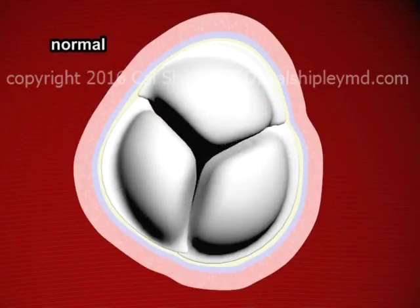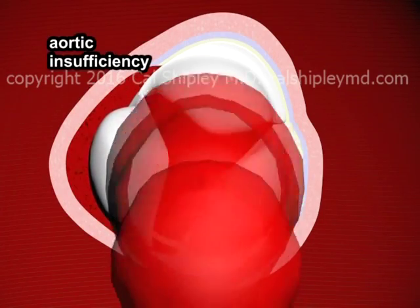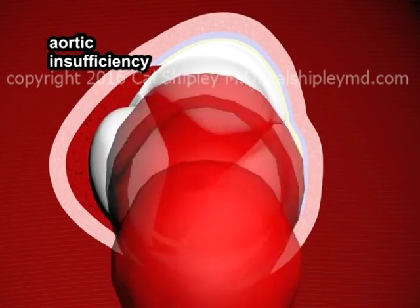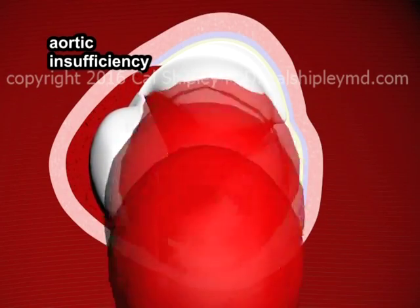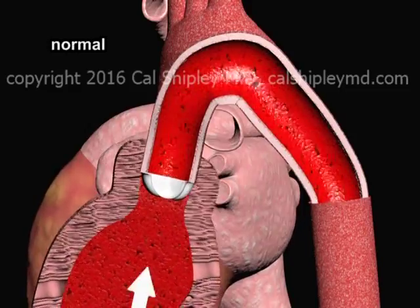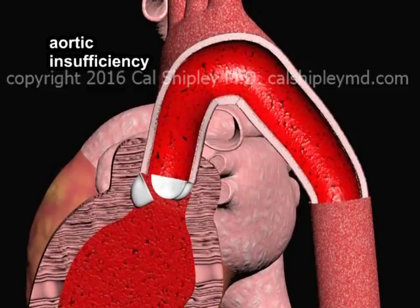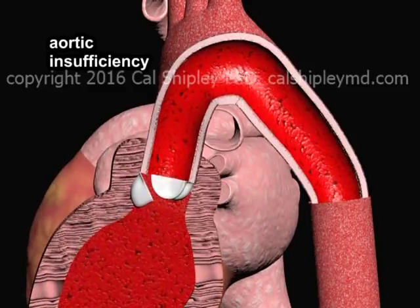Contrast a normally functioning aortic valve, which permits one-way flow of blood from the left ventricle into the aorta, with the leaflet-detached valve, which allows backflow of blood from the aorta into the left ventricle during diastole. And in the side view in cross-section, we see how the normal one-way flow of blood becomes a two-way flow in aortic insufficiency due to leaflet detachment.